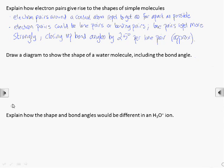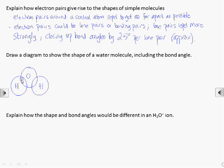To be sure of the number of electron pairs around the central atom, it helps to draw a dot and cross diagram. Here we can see that the central oxygen atom in water has 4 electron pairs around it. You should note that for the purposes of shapes and bond angles, a double or triple covalent bond still only counts as one bonding pair.